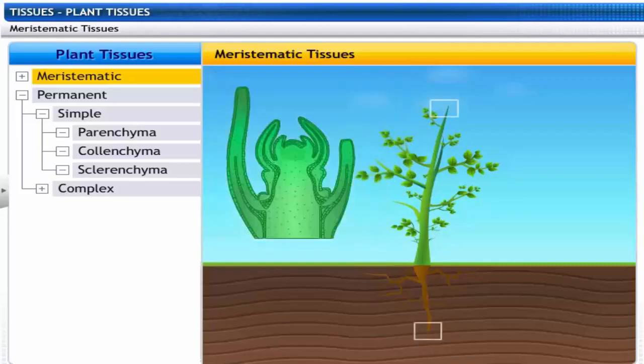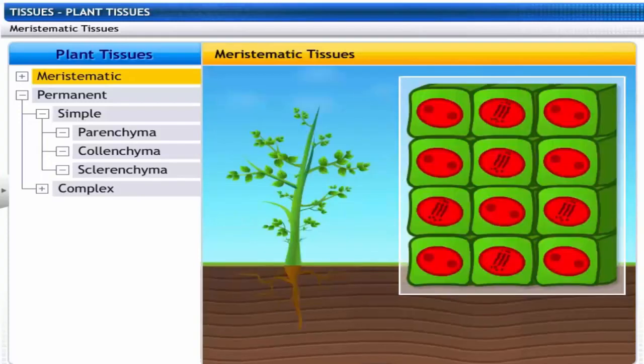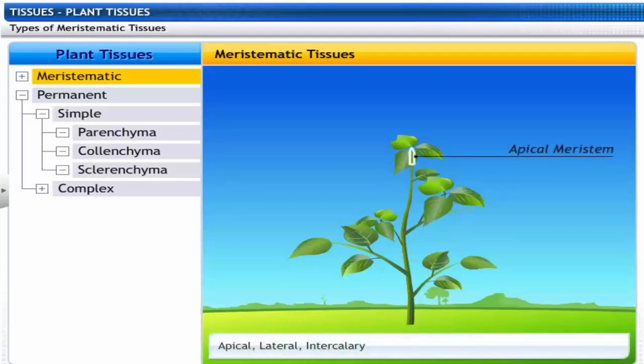Plant growth occurs only at those points where these tissues are present, at the tips of the stem and the root. Meristematic cells are living, cubical and thin-walled. Each cell has a large nucleus. Cells are closely packed with no intercellular spaces. Depending on the region where they are present, meristematic tissues are classified as apical, lateral, and intercalary.